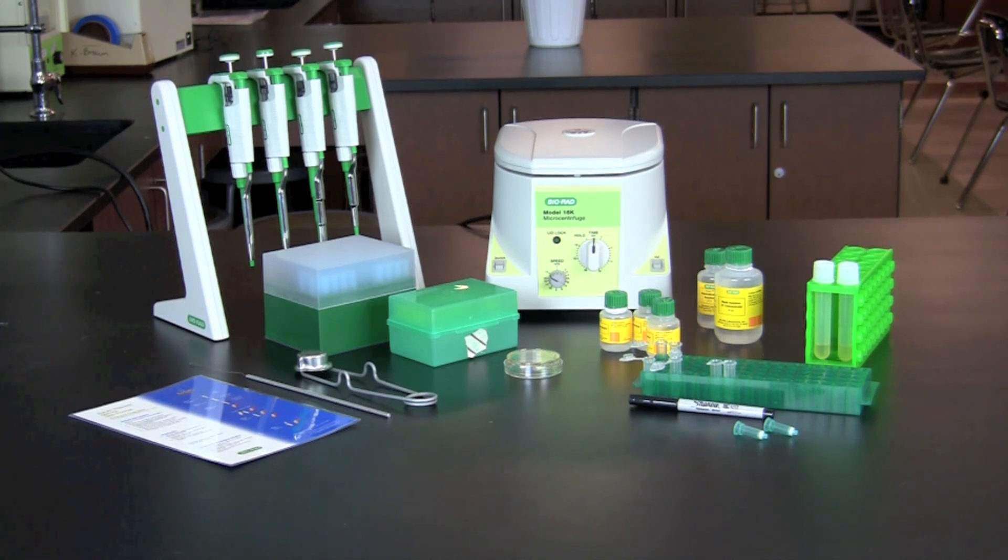In this video you will learn how to perform a mini prep. Bacteria containing plasmids will be grown in liquid culture. The plasmids will then be extracted using alkaline lysis method. Finally, column chromatography will be performed to purify the plasmid DNA. When plasmid DNA is purified on a small scale, as performed in this activity, it is called a mini prep.